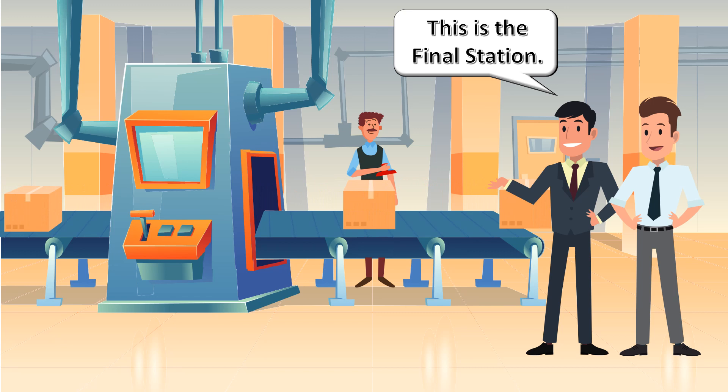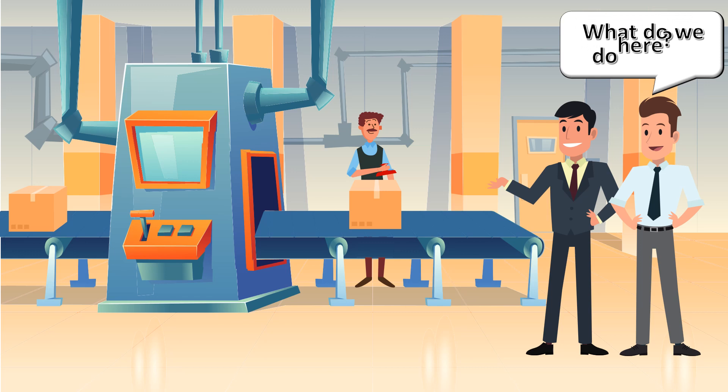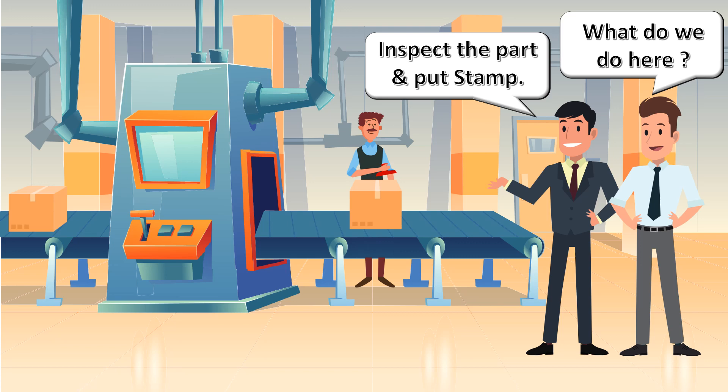Tim went to the shop floor where the supervisor explained. Sir, this is the final station where we dispatch the parts to the warehouse. Tim asked, what is the process here? The supervisor said the operator inspects the part and puts a serial number on the okay part.